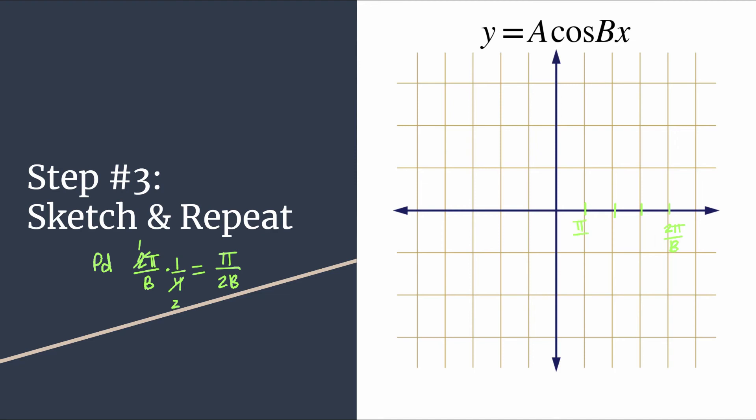Label your first tick mark one pi over two B. Well, two pi over two B is just going to be pi over B and three pi over two B. And notice the one we already labeled should be four pi over two B, which does simplify to two pi over B. So we should feel like, okay, everything's falling into place.